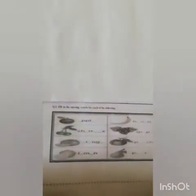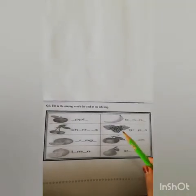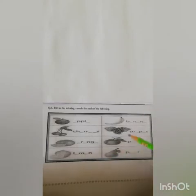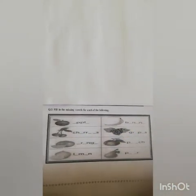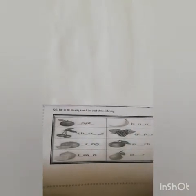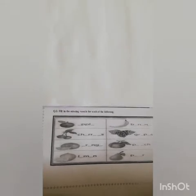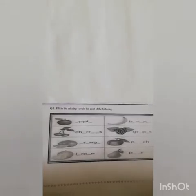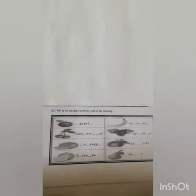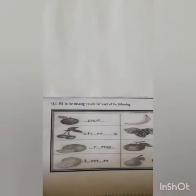We are going to start the work. The question is: fill in the missing vowels for each of the following. As you can see, here are pictures of fruits, and we have to put the blanks in them — just vowels. Vowels are a, e, i, o, u — all five of these are vowels. We have to put them in correctly.